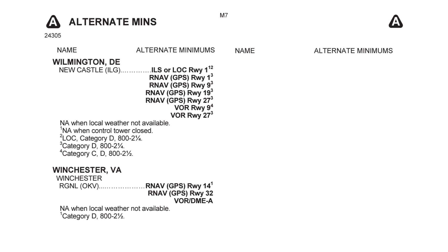So the alternate minimums section for an airport is a good place for information on using it as an alternate. Be careful, however — make sure that in addition to selecting an airport, you're basing your alternate choice on an actual approach and looking at its plate too.